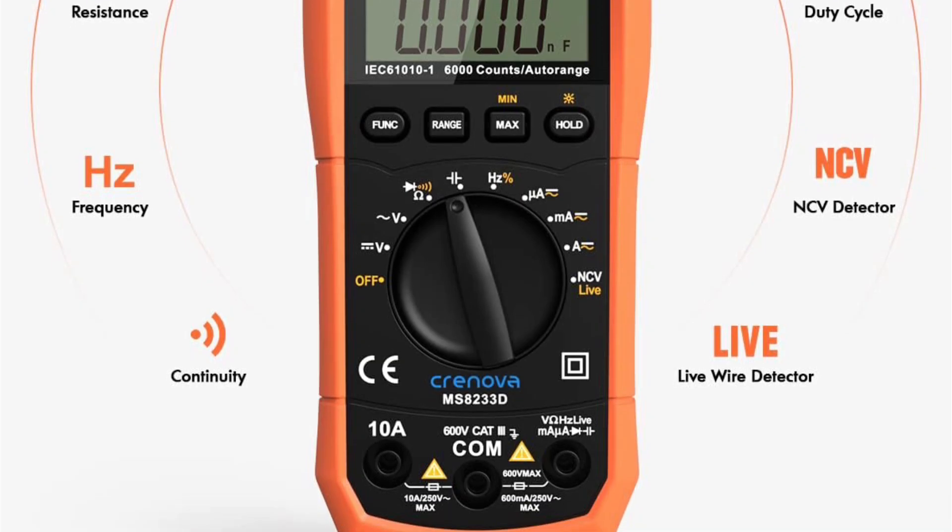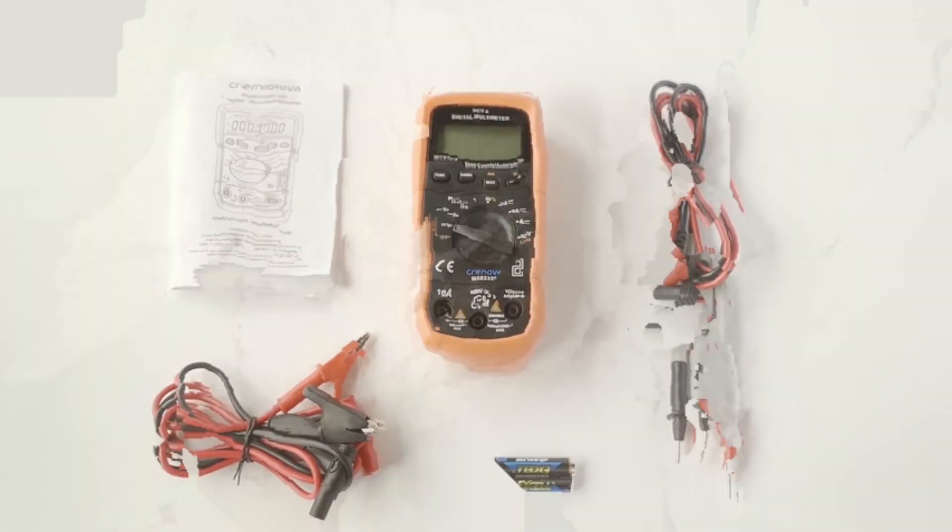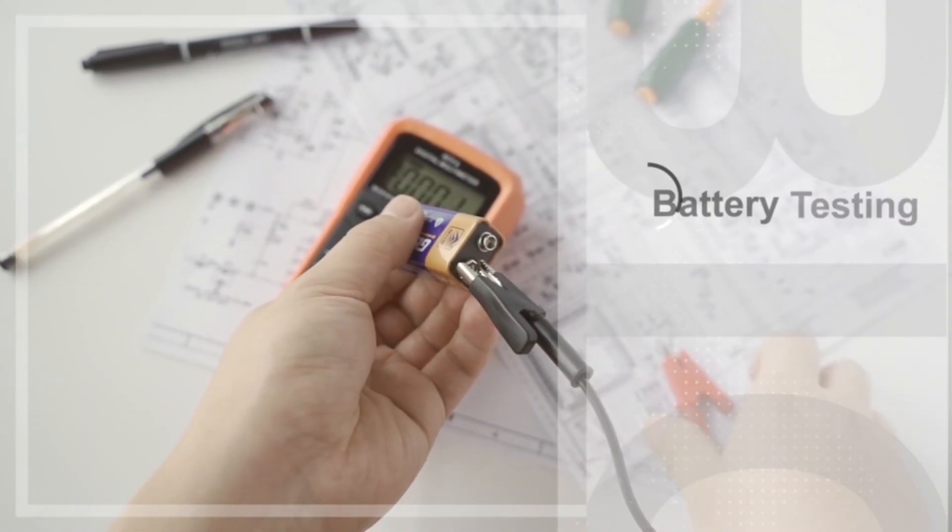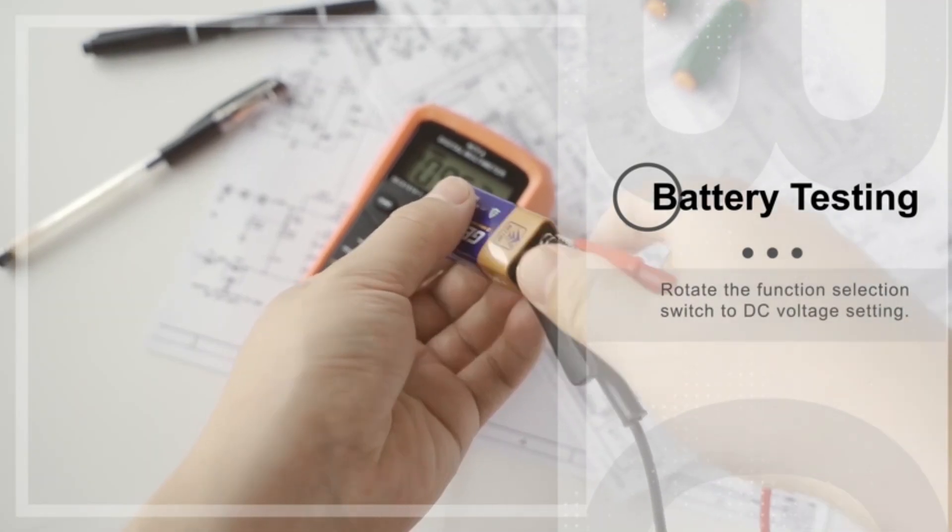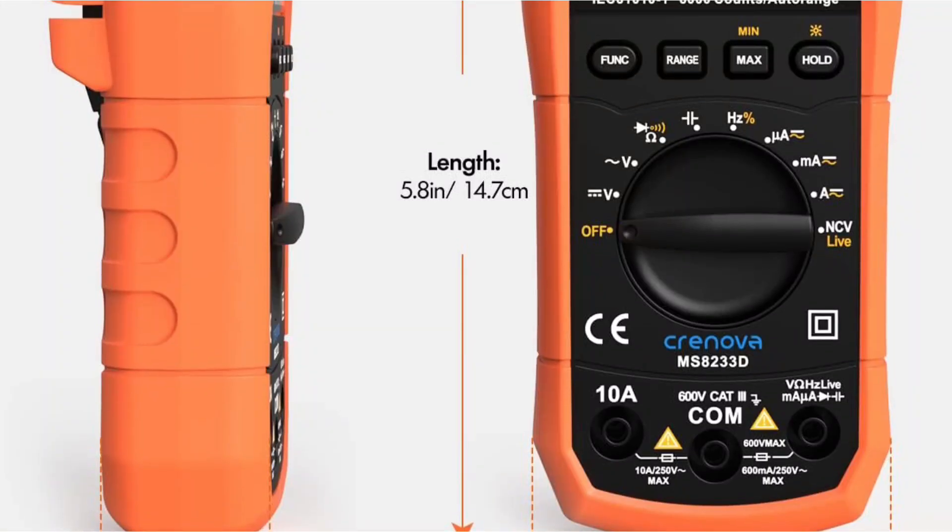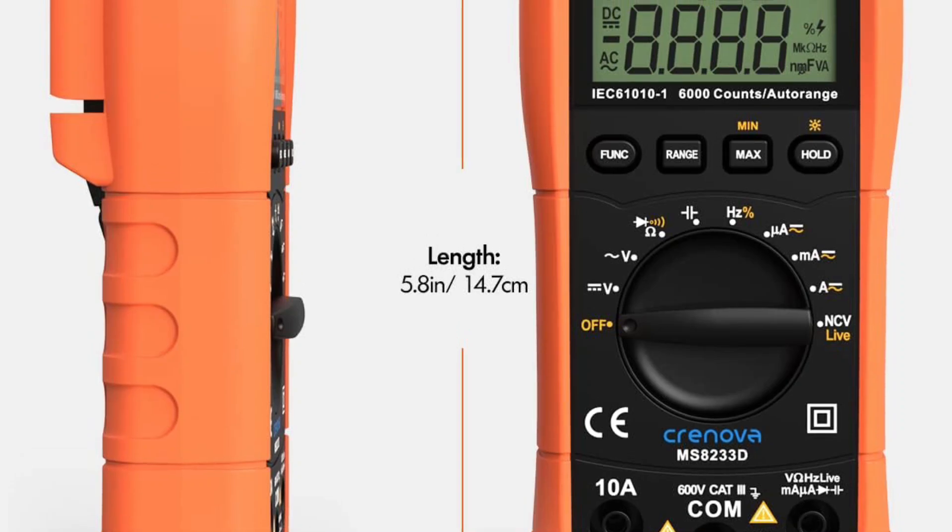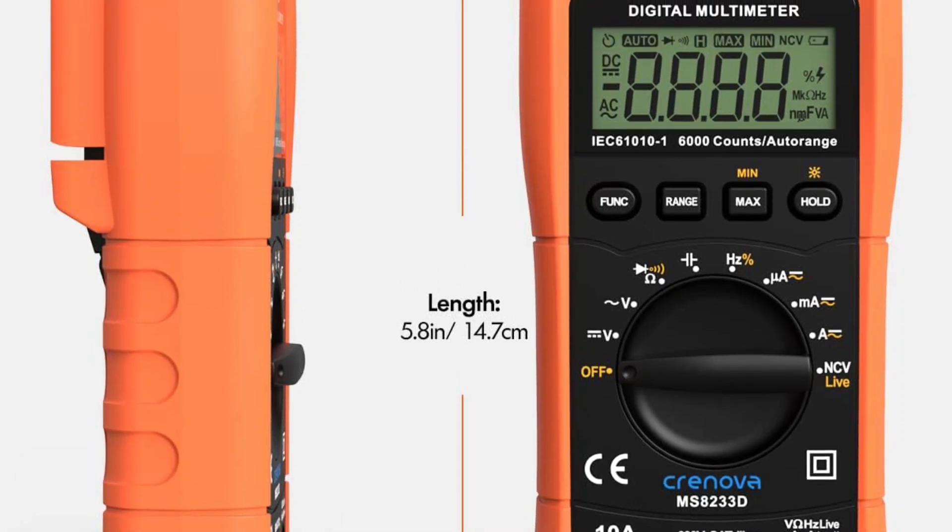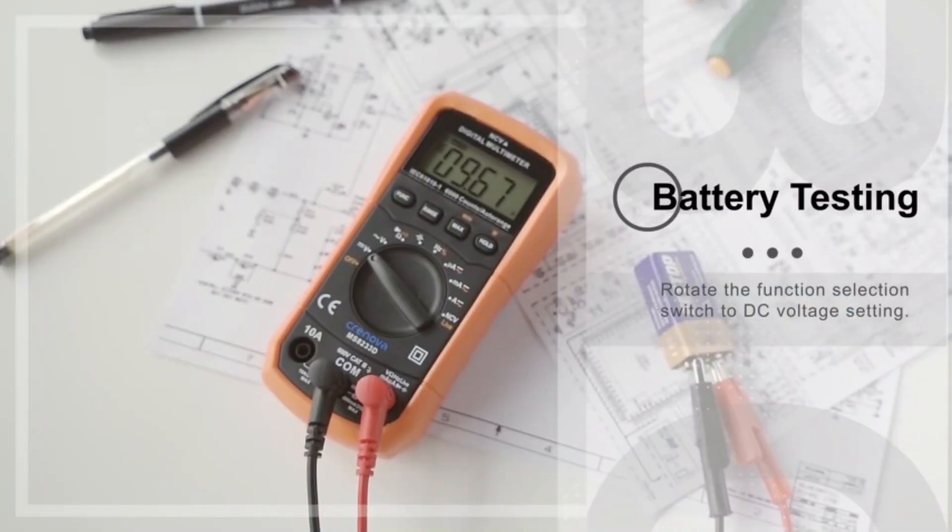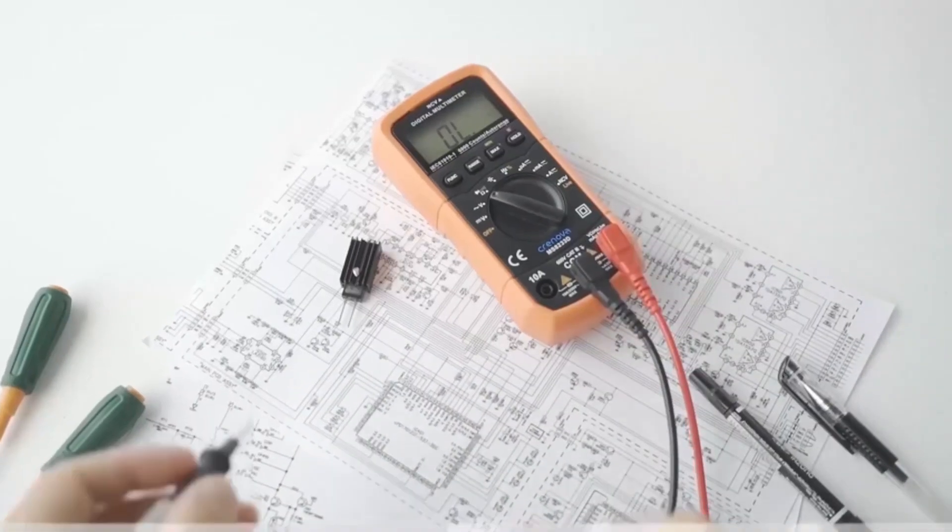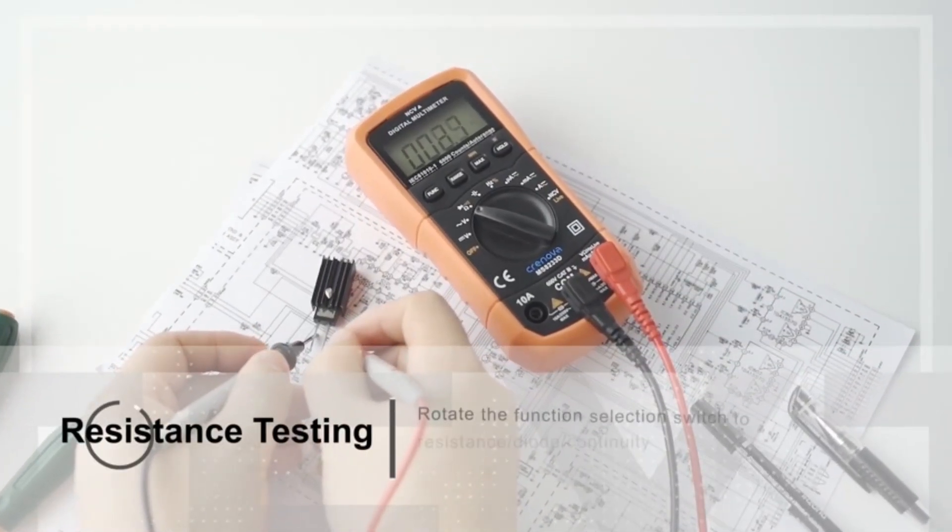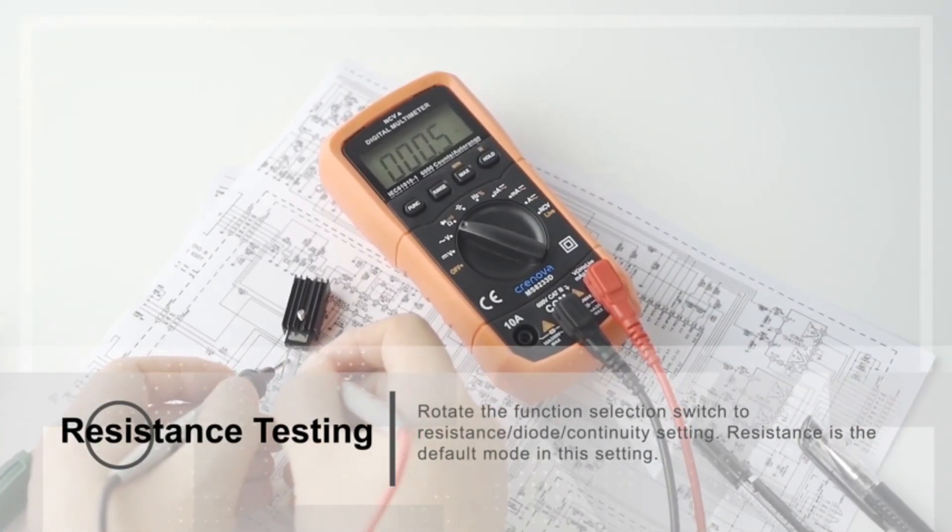The MS-8230 3D boasts a compact and ergonomic design with a large backlit LCD screen, enhancing visibility in various lighting conditions. The multimeter includes a protective rubber sleeve to prevent damage from drops and impacts, making it durable for everyday use. Its intuitive interface and auto-ranging capability simplify operation even for beginners.